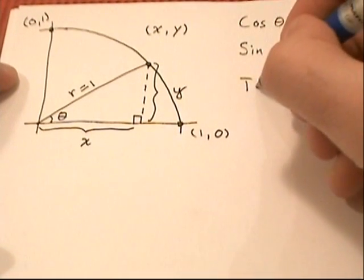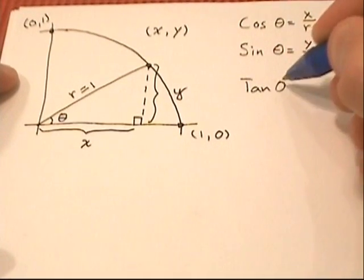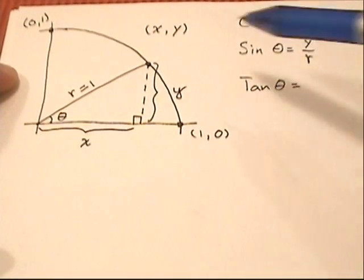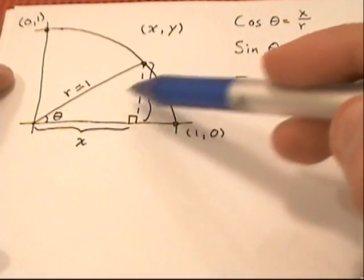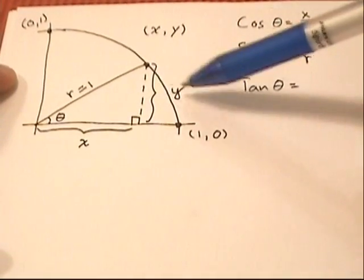And finally, tangent of an angle theta is equal to opposite over adjacent, so in other words y over x.